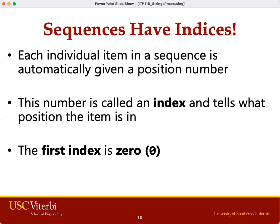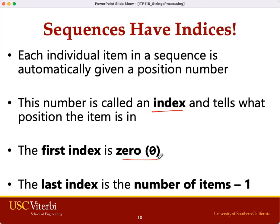Strings are sequences. A sequence is a series of items, so a string is a series of characters. Strings keep track of their characters through a position number called an index. The first character has an index of 0, and the last character in the sequence has an index of the number of items minus 1. The number of items is also considered the length of the sequence or the string.